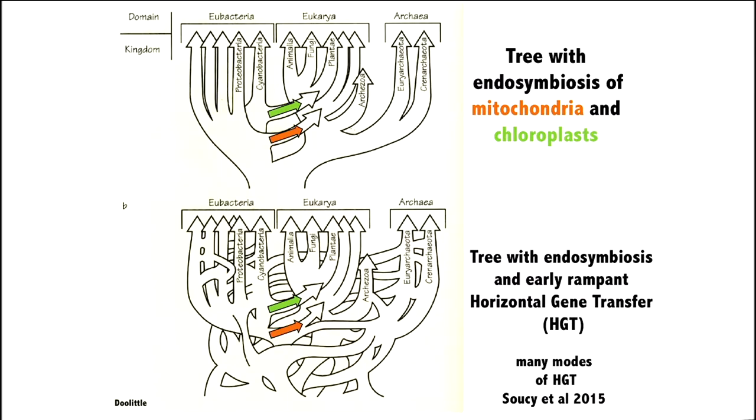Now, the tree on the top is kind of simple, but it's probably wrong. Doolittle decided, you know what, I'm going to fix this, and you can see at the bottom of the tree on the bottom, you have a lot more horizontal gene transfer going on, left and right and left and right, lots of exchanges. Genes are being exchanged, not too dissimilarly from the way we exchange ideas. So, if you're interested in this idea of horizontal gene transfer, which probably was an important mode of transfer of information in early life, have a look at this Soucy et al. review article in 2015.